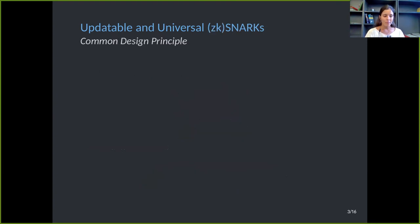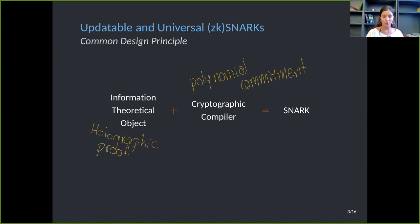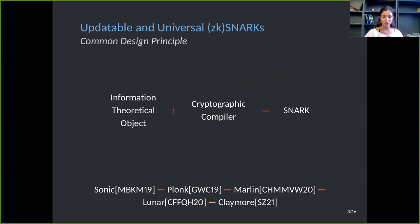Since the appearance of this seminal work, many constructions of SNARKs that use updatable and universal SRS have been done. And the nice thing is that all of them share some common principle, which consists in breaking the construction of the SNARK in two steps. First, we work in an information theoretical object, prove its security, and then by using cryptographic assumptions, finally compile it into a SNARK. This information theoretical object is what we call a holographic proof. And the cryptographic compiler is done using a polynomial commitment. All the constructions that we are aware of in the updatable universal model follow this blueprint.